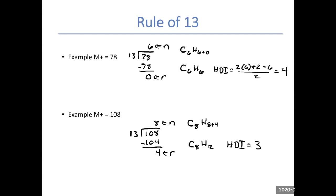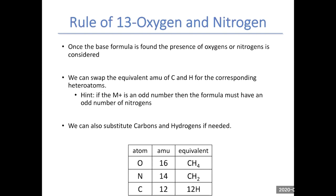So now we want to extend beyond base formulas. Once the base formula is found, the presence of oxygens and nitrogens is considered. We would determine if we had an oxygen or nitrogen present by looking at the spectra, your IR and your NMR. We can swap out the equivalent AMU of carbon and hydrogen for the corresponding heteroatom. A good hint and rule of thumb is if your molecular mass is an odd number, then your formula must contain an odd number of nitrogens. If your molecular mass is positive, most likely you do not have any nitrogens, or very rarely you might have two nitrogens. We can substitute carbons and hydrogens as needed.